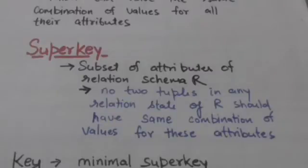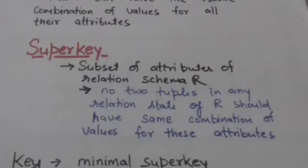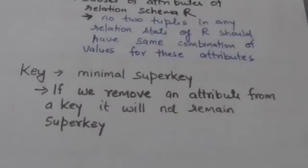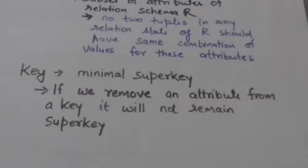Every relation has at least one default super key, that is the set of all its attributes. A super key can have redundancy. The super key which doesn't have redundancy is called a key. A key is a minimal super key.